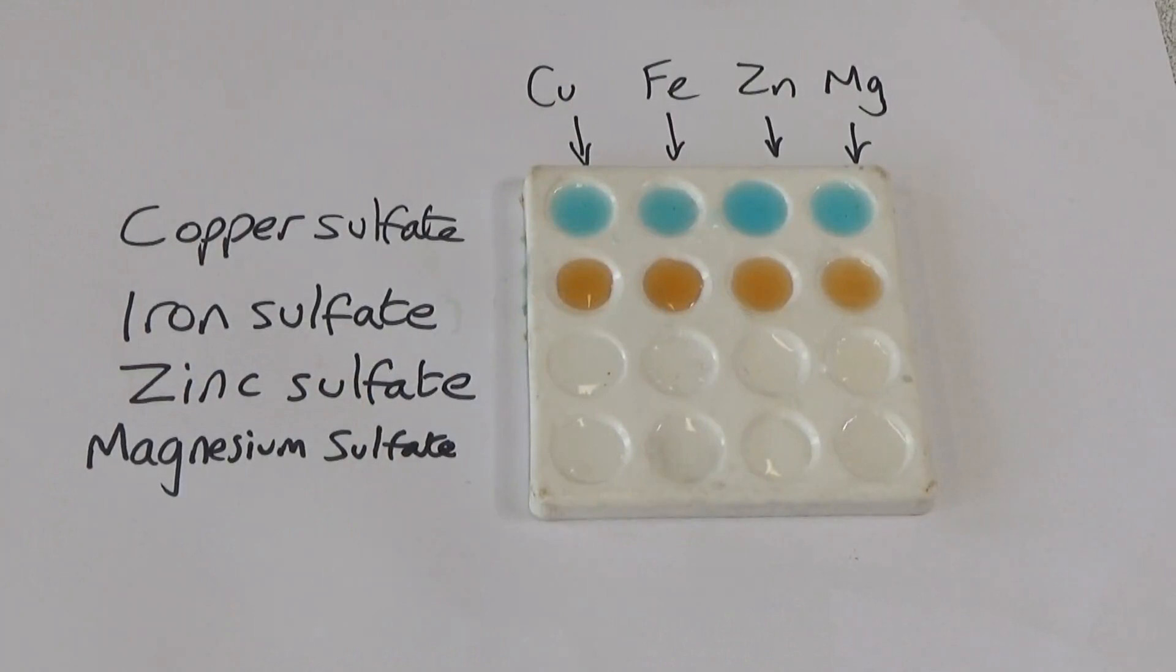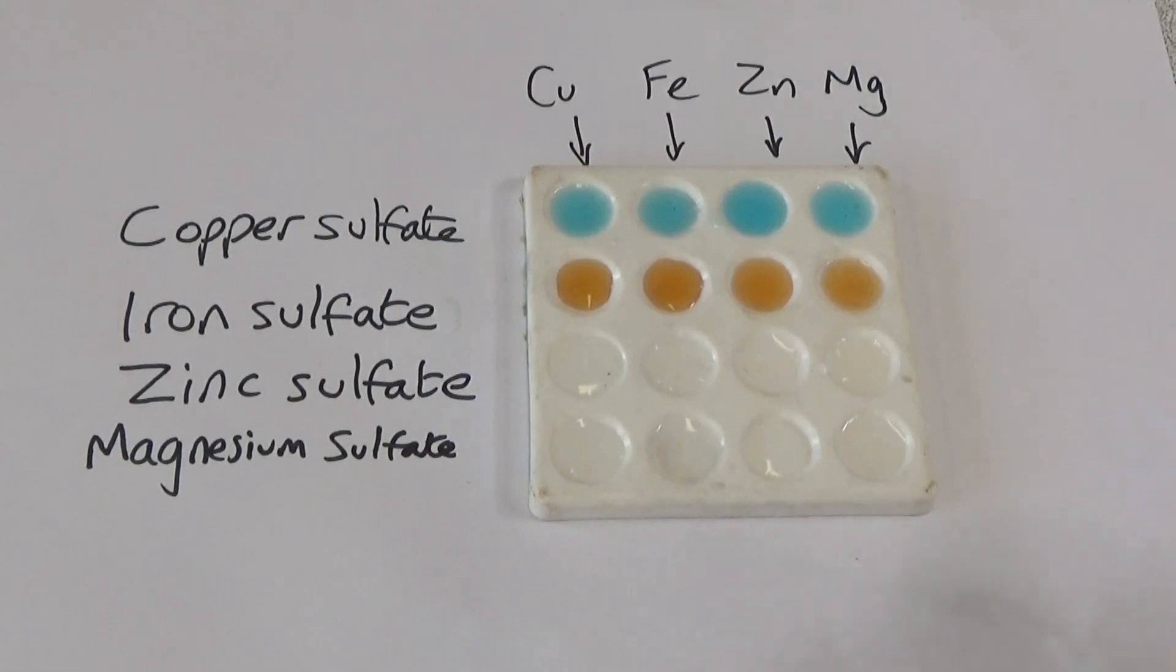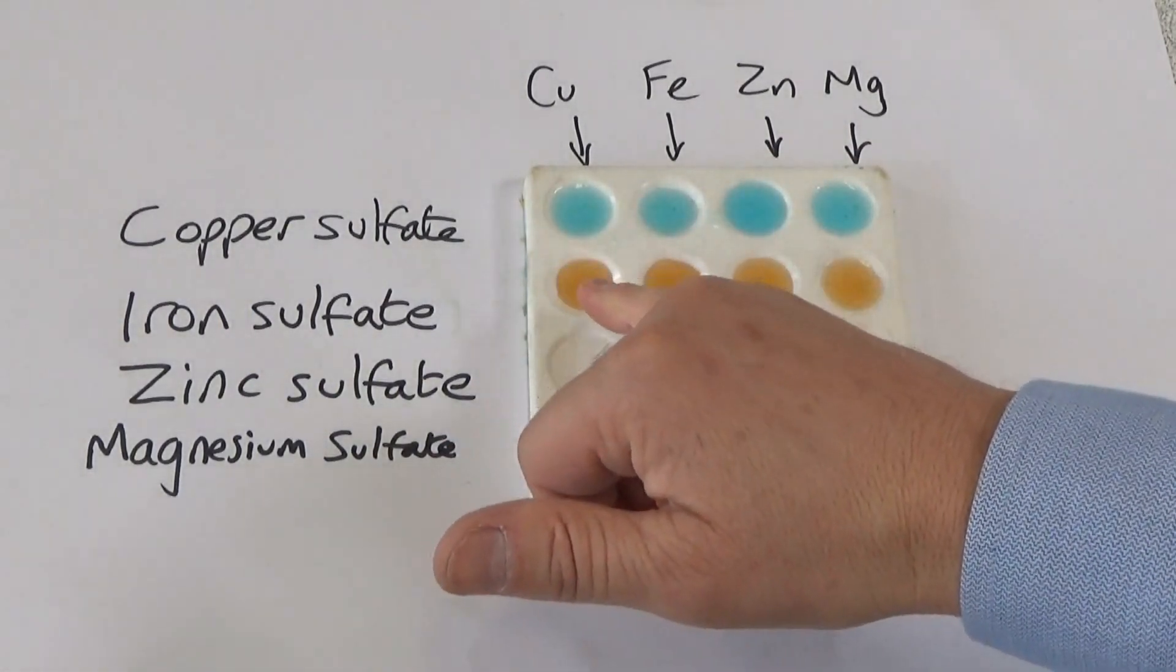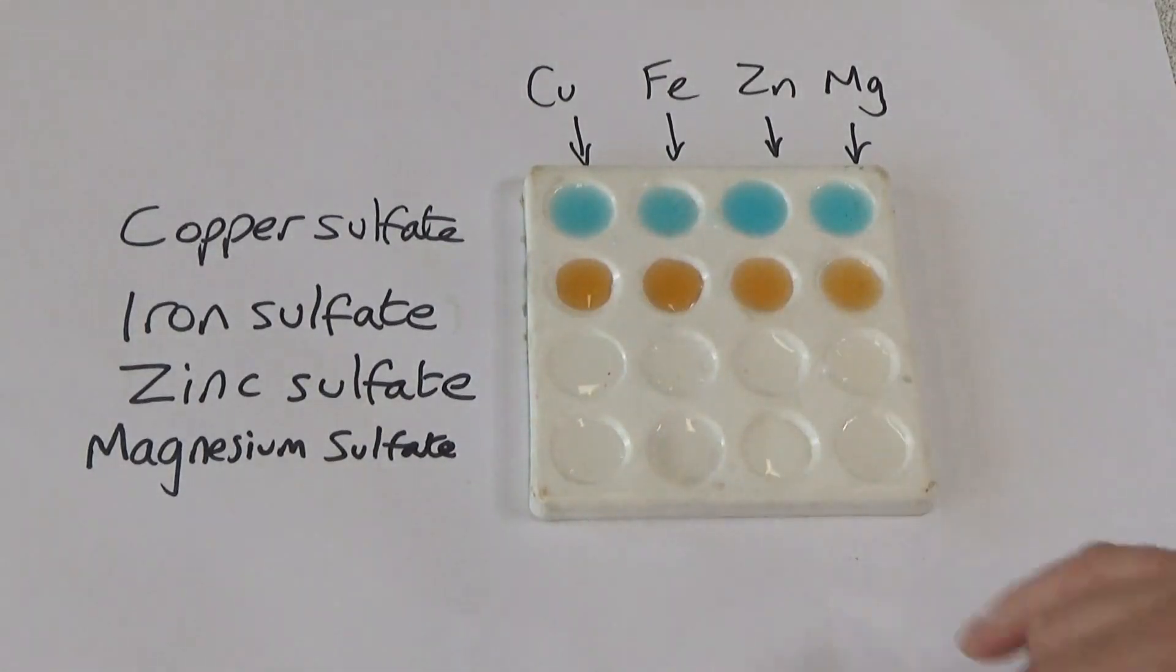We're going to have a look at some displacement reactions now, and I'm using this dimple tray so I can carry out lots of reactions at the same time. I've already prepared it with copper sulfate on the top row, the blue solution. This orangey colored solution is iron sulfate. Then we've got colorless zinc sulfate and colorless magnesium sulfate. In each column I'm going to put a different metal. So the first column I'm going to put a piece of copper in each solution.